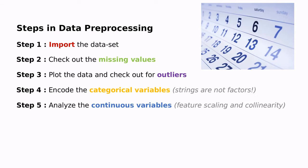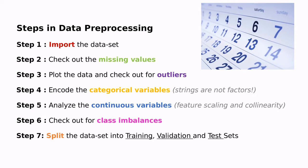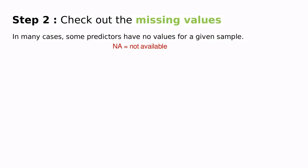Step five, analyze the continuous variables in order to make them more suitable for the fitting, or avoid some spurious correlations between variables. Step six is check out for class imbalances. Step seven, split the data into training and test, and maybe sometimes validation. Let's skip step number one and jump into step number two.